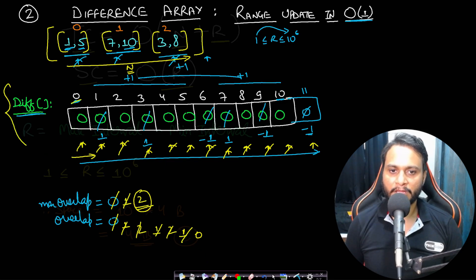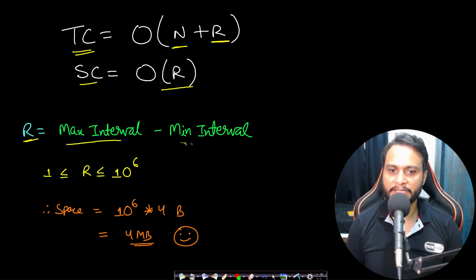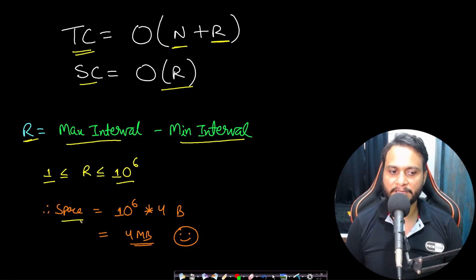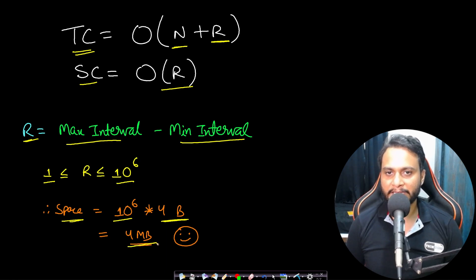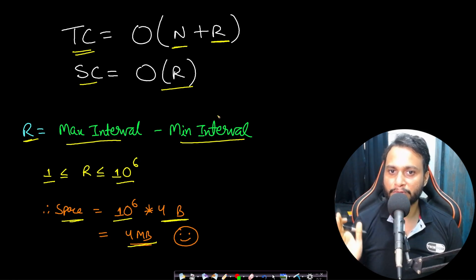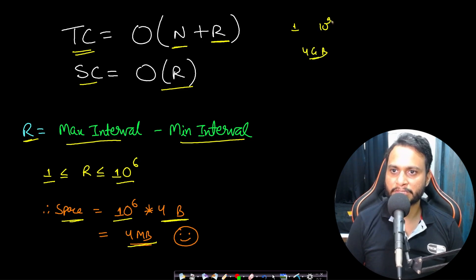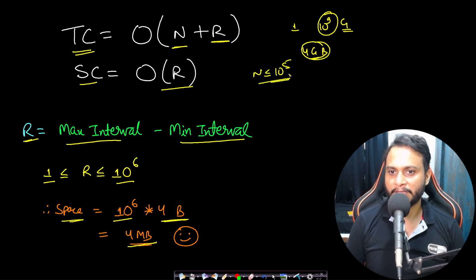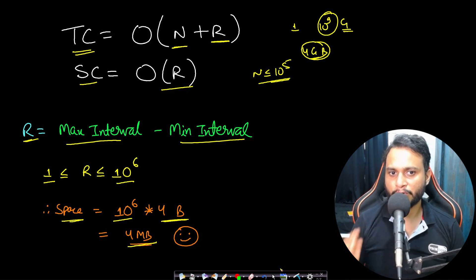The range R equals maximum minus minimum interval value. Since the problem gives a range of 1 to 10^6, the difference array takes at most 10^6 integers × 4 bytes = 4 MB, which is within memory limits. However, if the range were 1 to 10^9, that would require 4 GB of memory — not feasible. In that scenario, the line sweep approach is preferable since it only uses O(n) space. So the choice between the two techniques depends on the range of input values.